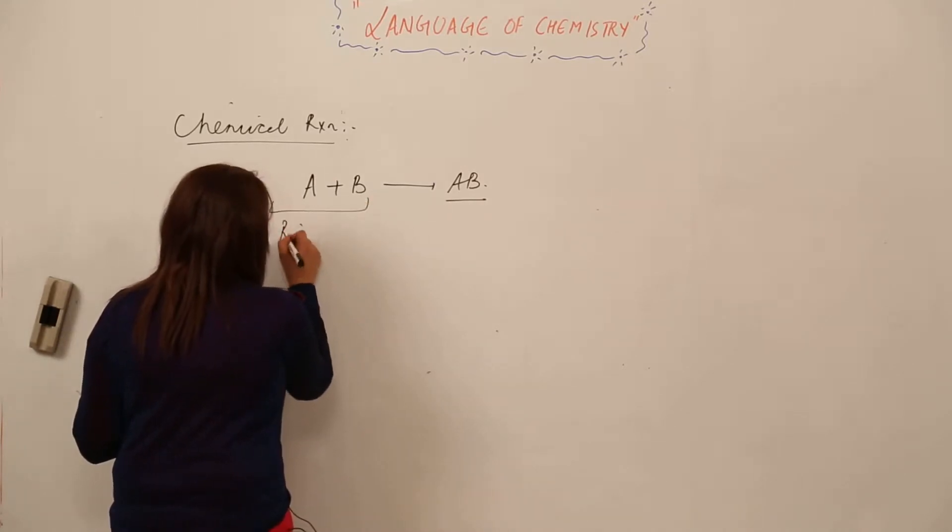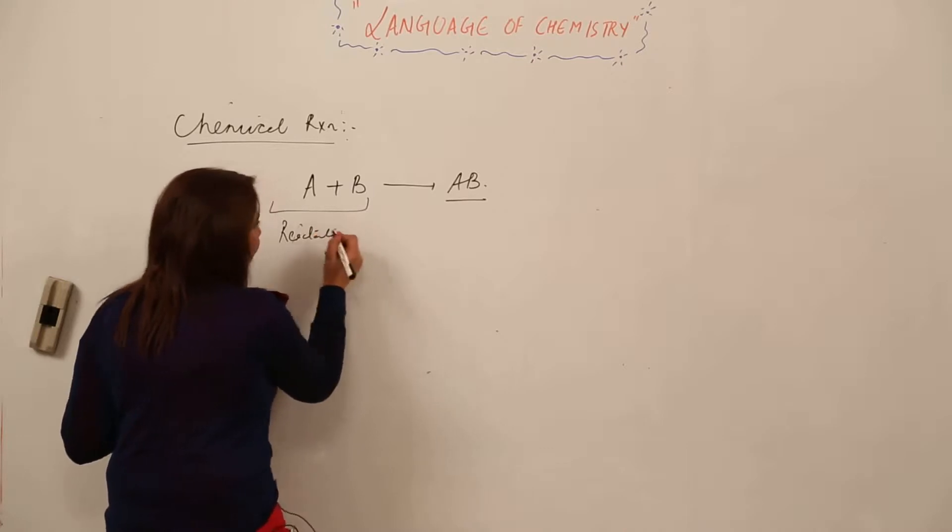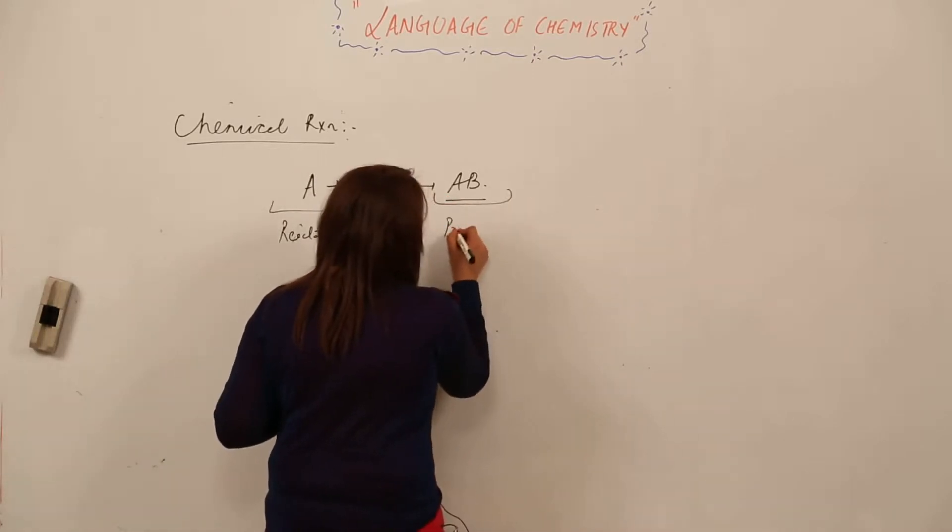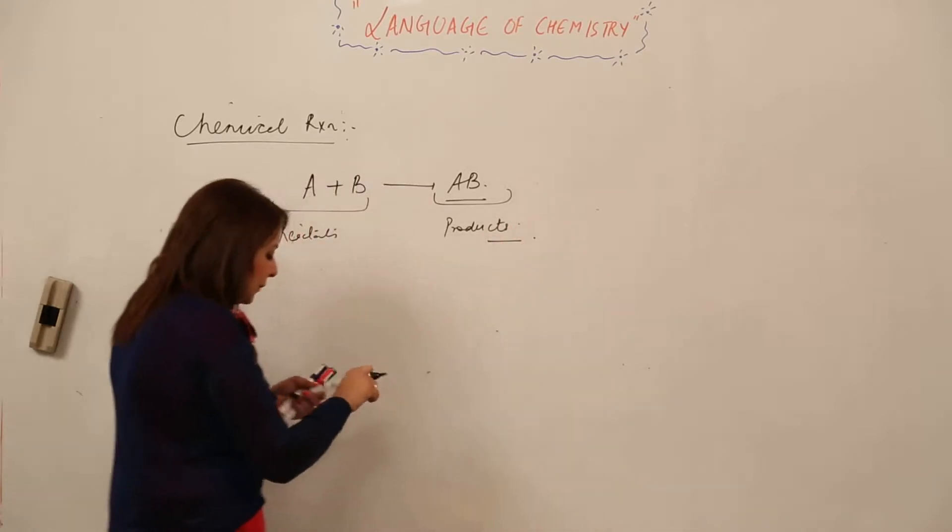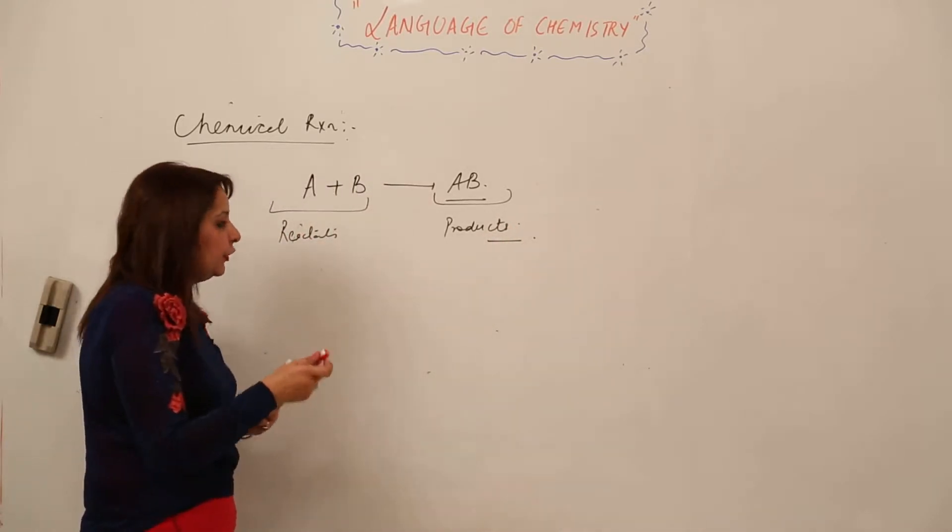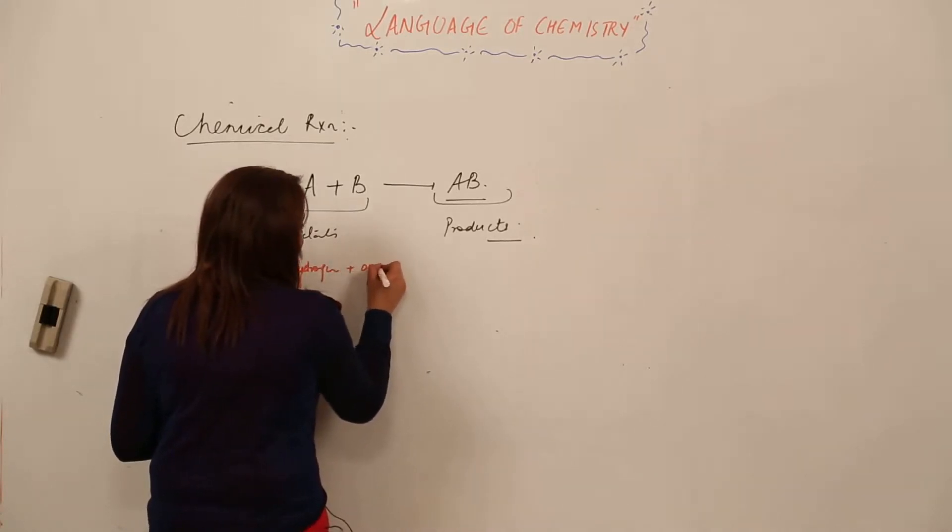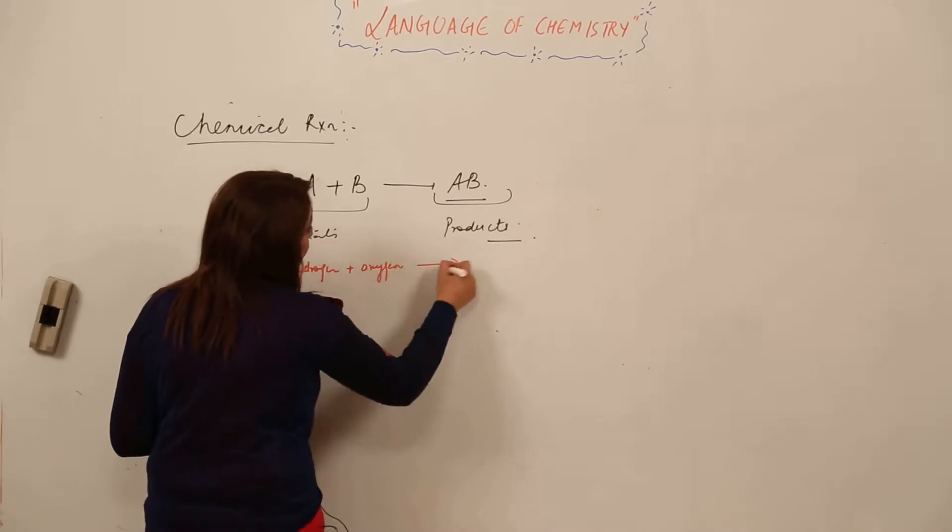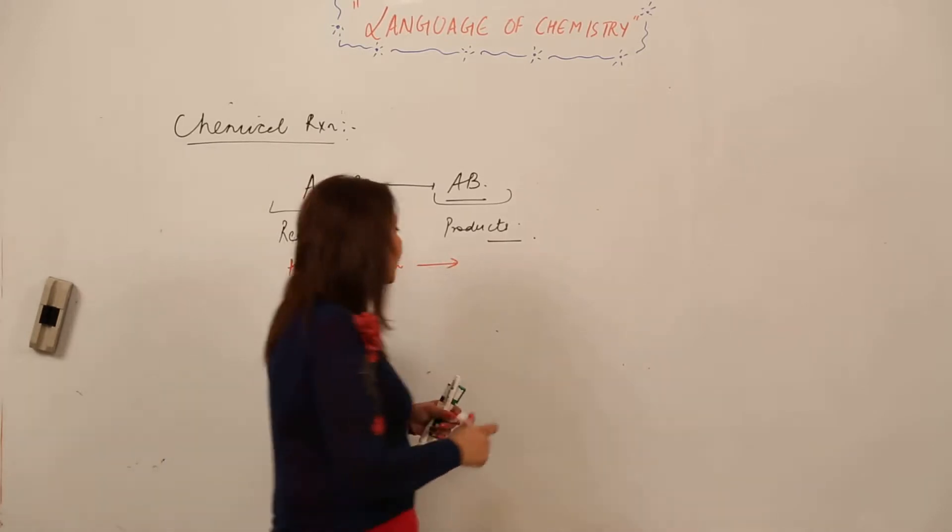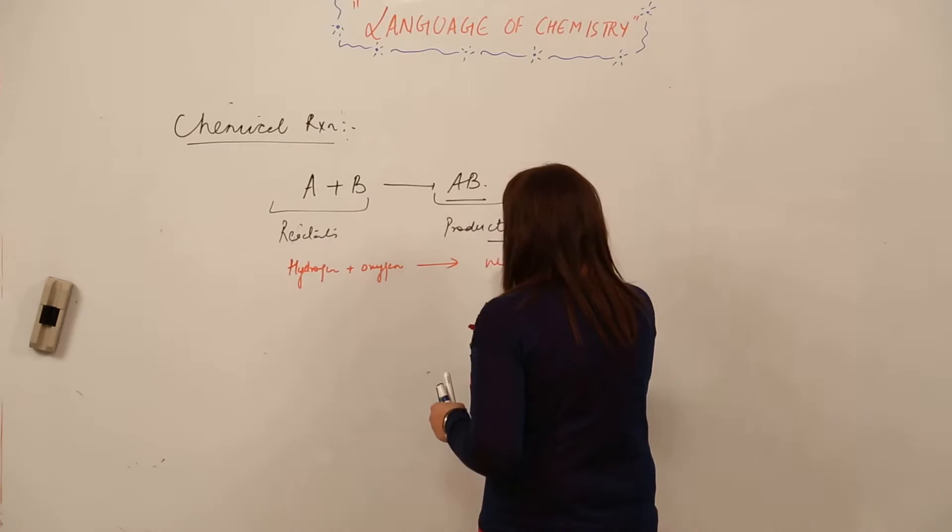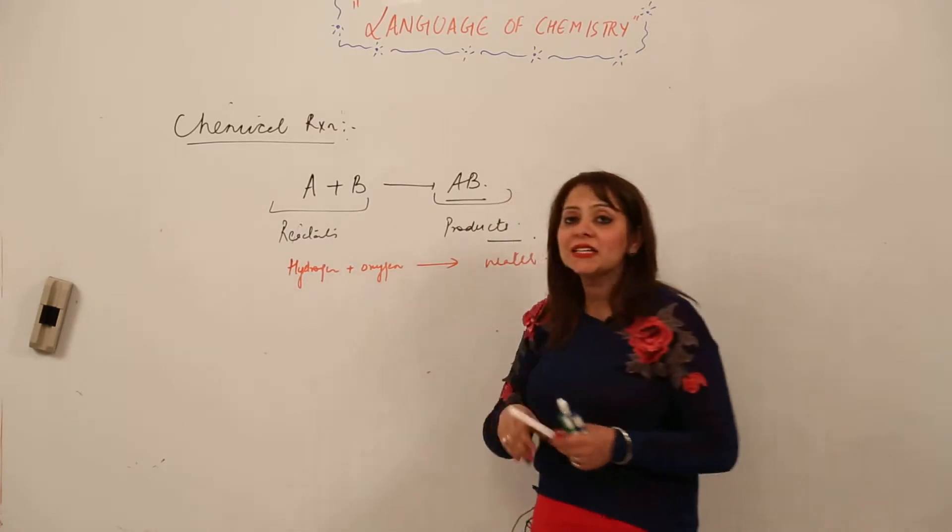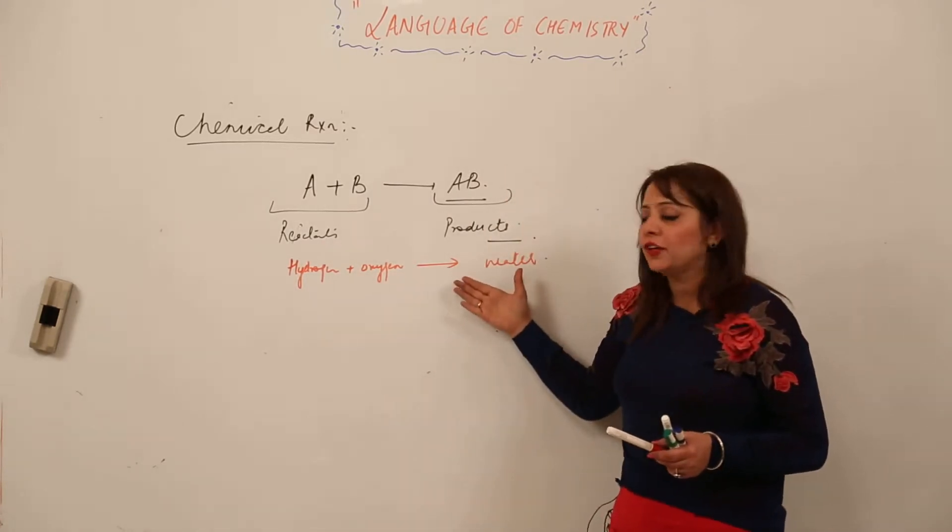The substances which we mix are called reactants and the new ones that are formed are called products. For example, hydrogen plus oxygen—when hydrogen is added to oxygen, they unite to form water.